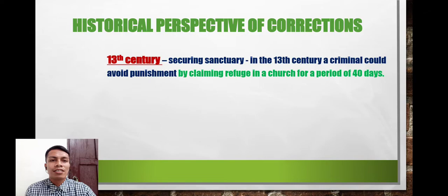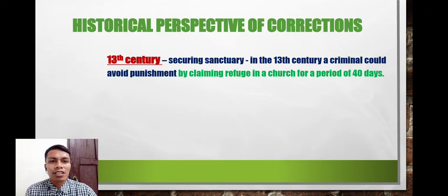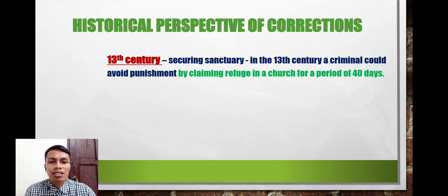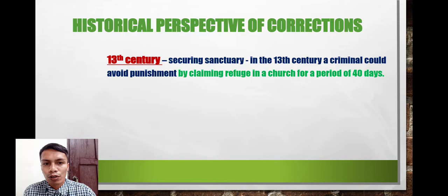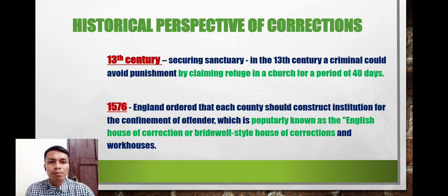First, in the 13th century, we have the securing of sanctuary. In the 13th century, a criminal could avoid punishment by claiming refuge in a church for a period of 40 days. The criminal could seek sanctuary in a church, where they would be housed or corrected. During those times, there were no formal institutions yet.